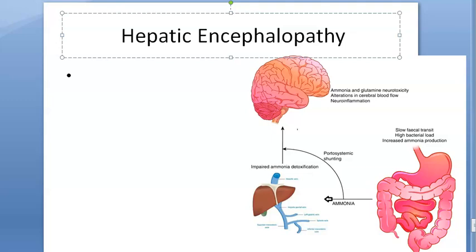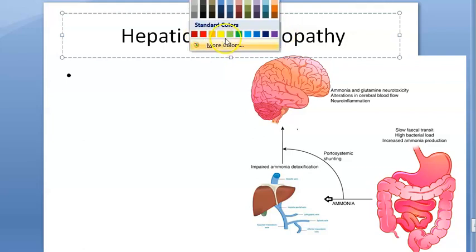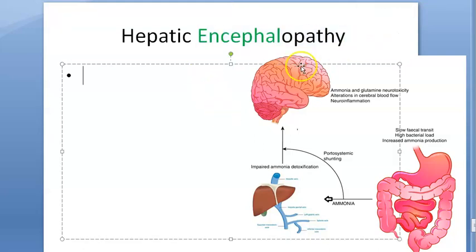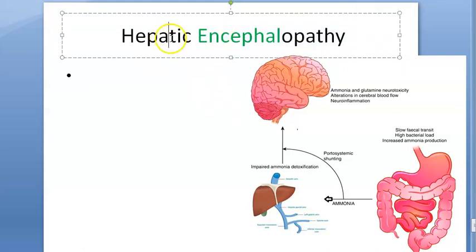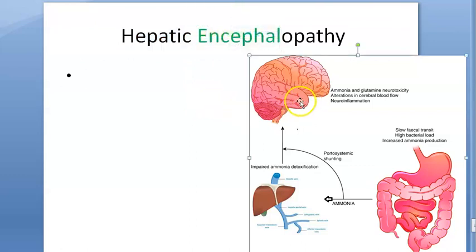Hello people. In this video we want to look at hepatic encephalopathy. Encephal refers to your brain — so there is some problem in the brain. This is because of the liver, so this is hepatic encephalopathy.